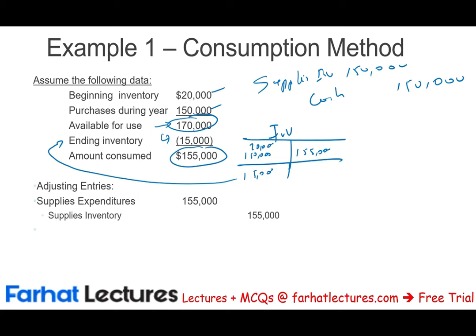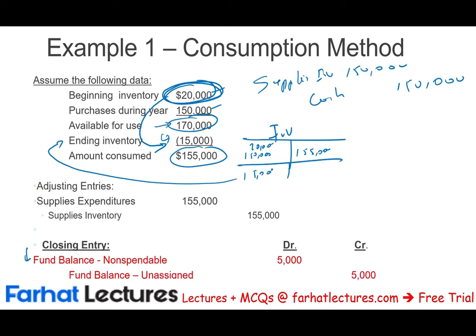But we're not done yet. We have to adjust the fund balance non-spendable. In the prior year, fund balance non-spendable was $20,000 — equal to beginning inventory. Now the balance should be $15,000. So we debit fund balance non-spendable $5,000 and credit fund balance unassigned $5,000, to reduce the non-spendable to $15,000 of inventory on the statement of net position.